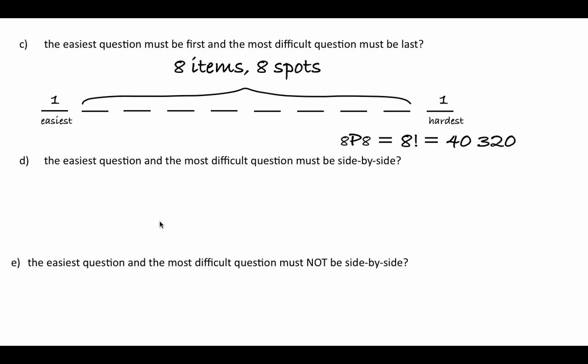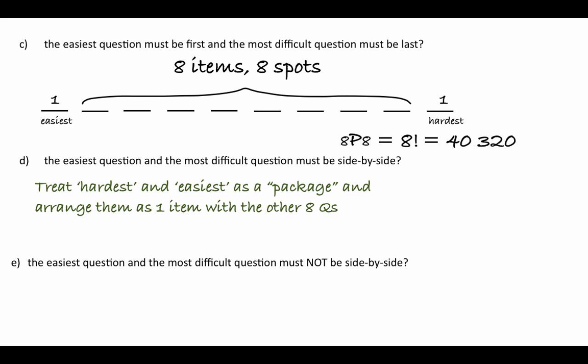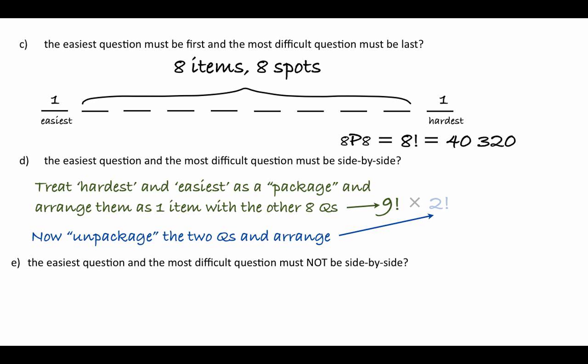Treat the easiest and hardest as a package with the other eight questions — that's nine items. Step one: arrange the package with the others in 9! ways. Step two: unpackage them — they can be arranged as easiest-hardest or hardest-easiest, which is 2! ways. So we get 9! times 2! = 725,760 ways when the easiest and hardest questions are side by side.